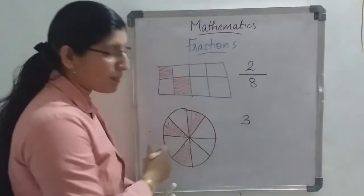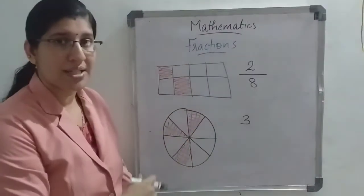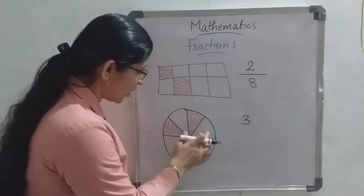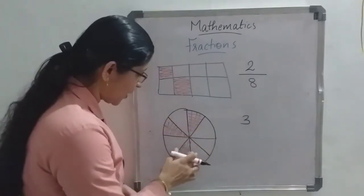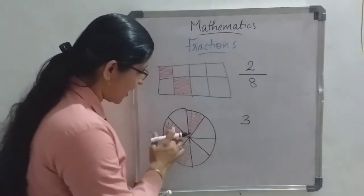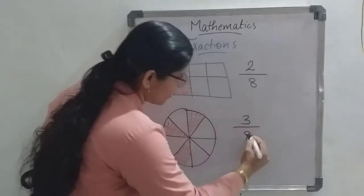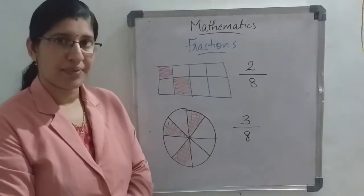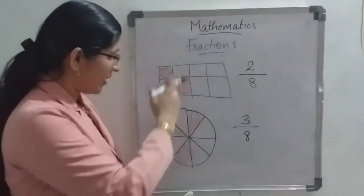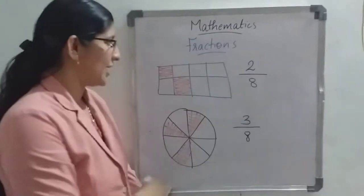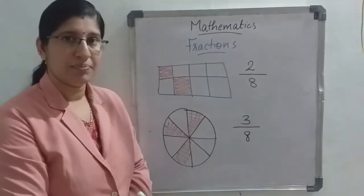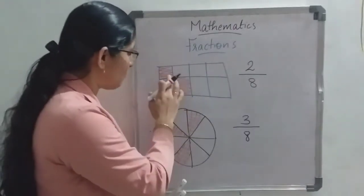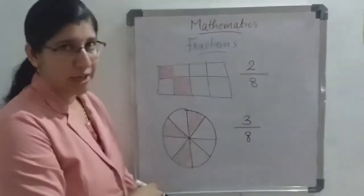What is the total number of equal parts? 1, 2, 3, 4, 5, 6, 7, 8 — so we write 8 below. The fraction is 3 by 8. Whenever you get a picture for writing the fraction, just count the number of shaded parts and write that above the line.